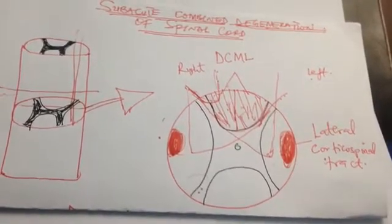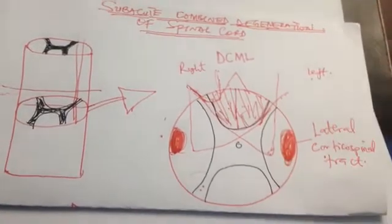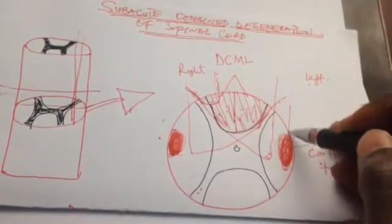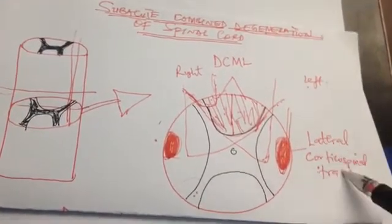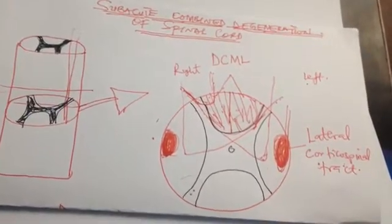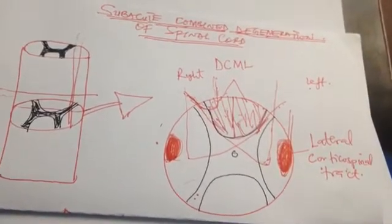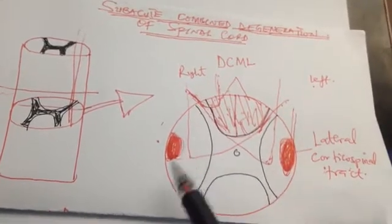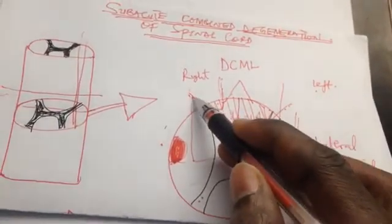Remember, these fibers cross at the level of the medulla oblongata as they are descending from the cerebral cortex — they cross to the opposite side. This means the fibers we see at the left side in the lateral corticospinal tract are connected above with the right hemisphere, because they cross at the level of the medulla oblongata as they descend.